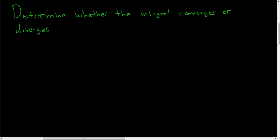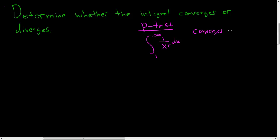In this video, we're going to look at some integrals and determine whether they converge or diverge. The main tool we'll be using is called the p-test. The p-test says that the improper integral from 1 to infinity of 1 over x to the p dx will converge if p is bigger than 1, and it will diverge if p is less than or equal to 1.